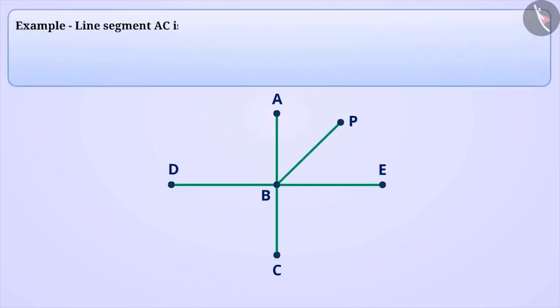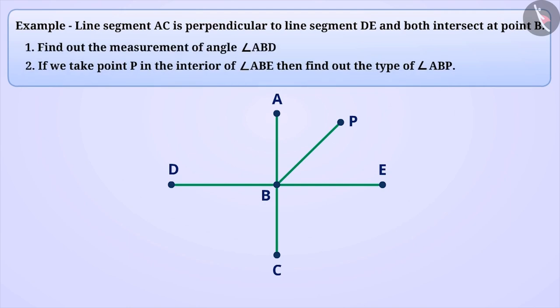Example 2. Line segment AC is perpendicular to line segment DE and both intersect at point B. Find out the measurement of angle ABD. If we take point P in the interior of angle ABE, then find out the type of angle ABP. Since the line segment AC is perpendicular to line segment DE, they both form 90 degree angle. Since both intersect at point B, we can say that angle ABD is equal to 90 degrees.